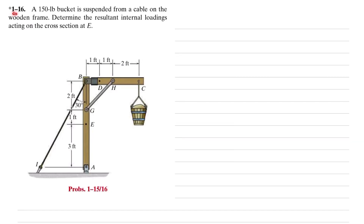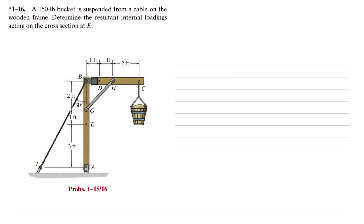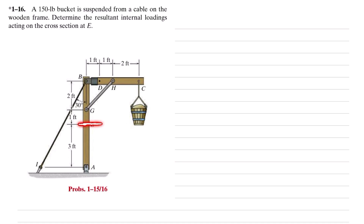Welcome back, problem 1-16. The statement is: a 150-pound bucket is suspended from a cable on a wooden frame. Determine the resultant internal loading acting on the cross-section at E. The bucket is suspended from point C with a load of 150 pounds. We have to find the shear force Ve, the normal force Ne, and the moment Me at point E.